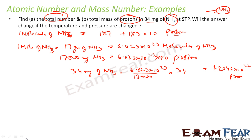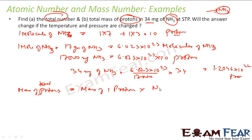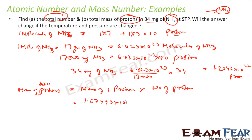Finding the total mass of protons is straightforward: total mass = number of protons × mass of one proton. Mass of one proton = 1.67493×10⁻²⁷ kg. Number of protons = 1.2046×10²². Multiplying gives 2.0176×10⁻⁵ kg.